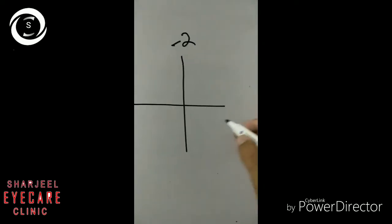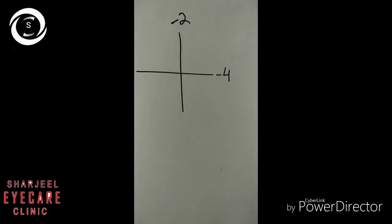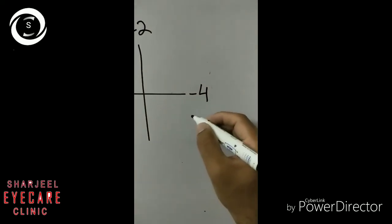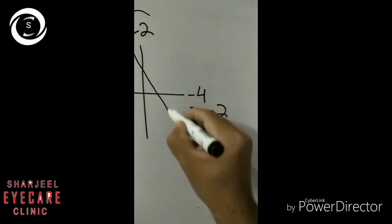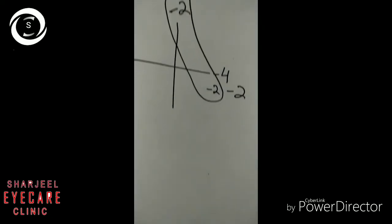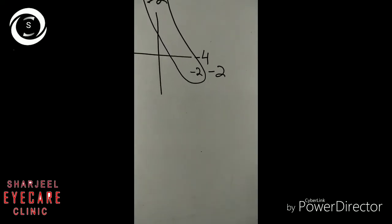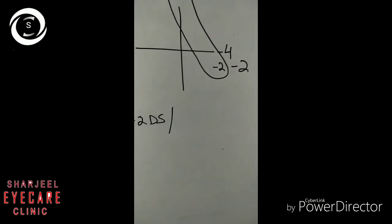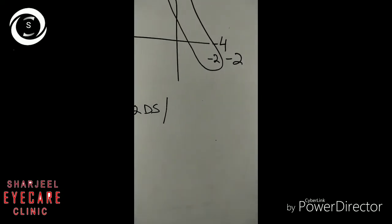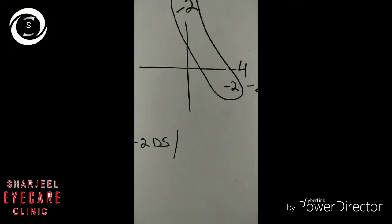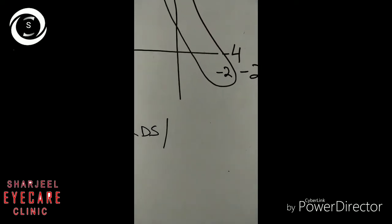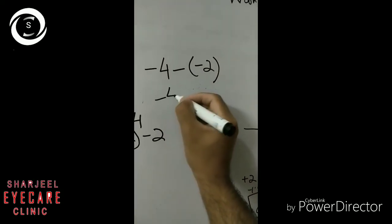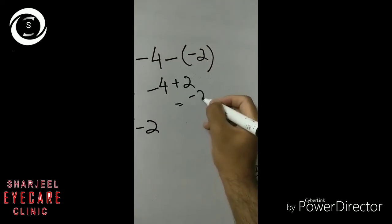Now the next example. Here we will take myopic corrections: the reflex was against and it was neutralized with minus 2 vertically, and minus 4 at the horizontal meridian. You can see minus 2 vertical and minus 2 horizontal — again we can take minus 2 as a diopter sphere because it is acting equally on both meridians. We are left with minus 2 horizontally, so we write minus 2 diopter sphere and minus 2 diopter cylinder, and since minus 2 is left in the horizontal meridian it will be represented at 90 degrees, because the cylinder axis acts perpendicularly to the shown meridian.